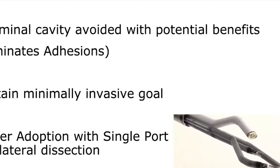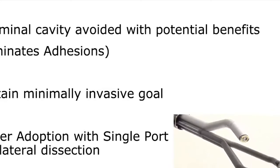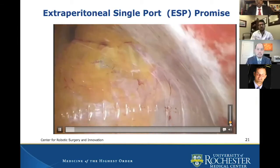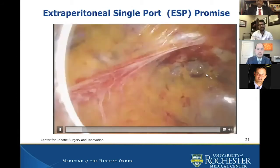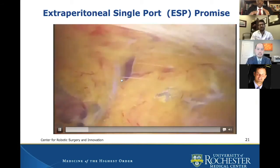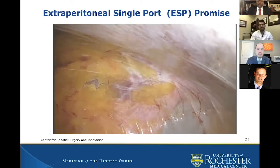I've been saying for some decades now there will be greater adoption with the single port because there's no lateral dissection. I'll share a brief video of the single port and how we create this space. You can see on the right side the epigastric, the peritoneum coming down, and here the left epigastric, peritoneum coming down. That's all you need to do — there is no need for lateral space creation because you don't need to be that lateral.